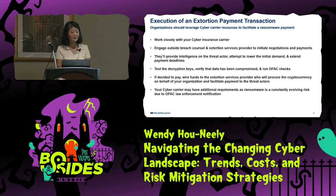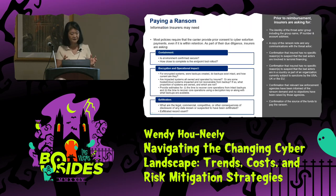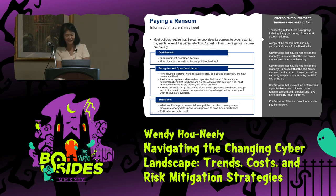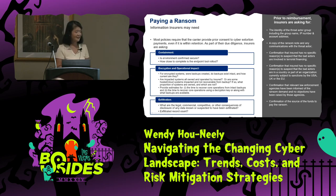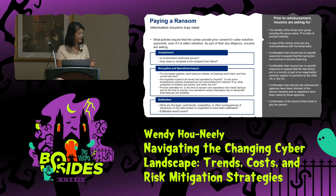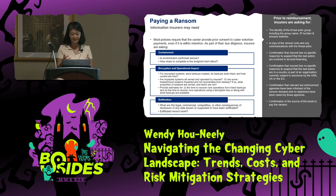For cyber carriers, here's a list of what insurance companies expect you to have when you file claims. This is meant to give an idea ahead of time: Is it contained? Is it encrypted? How does it impact operations? How many records were breached? Did you get them all out? Did you clean it all up? Is all the data yours? Those are the kinds of things they expect you to have in an inventory.